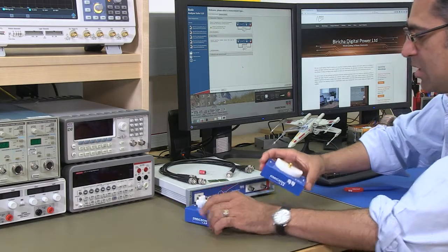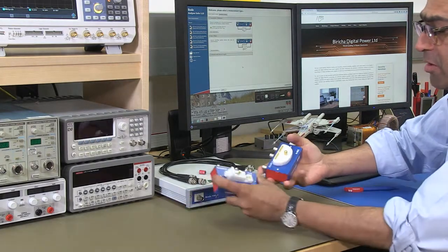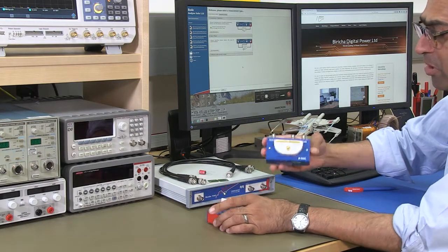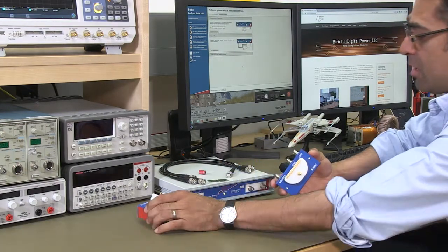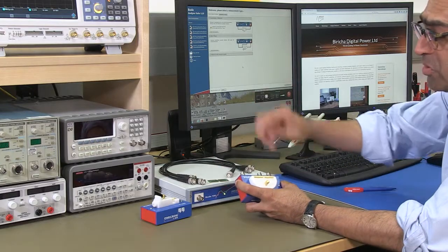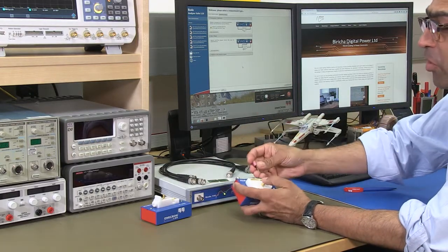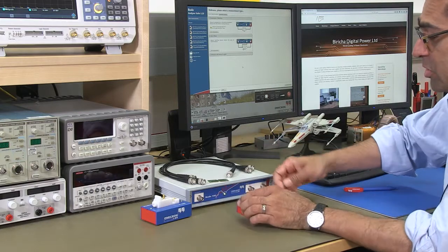First, we're going to connect up the test fixtures. There are two. There is one for through-hole components and one for surface mount. I have got a through-hole component at the moment, so I'm going to go through the through-hole measurement but later on we will do a surface mount.